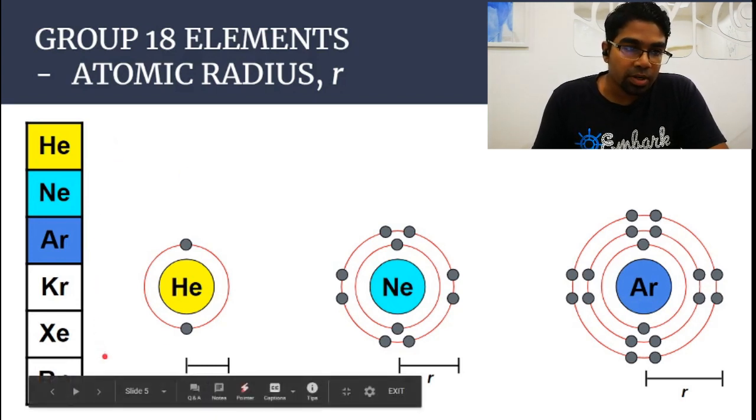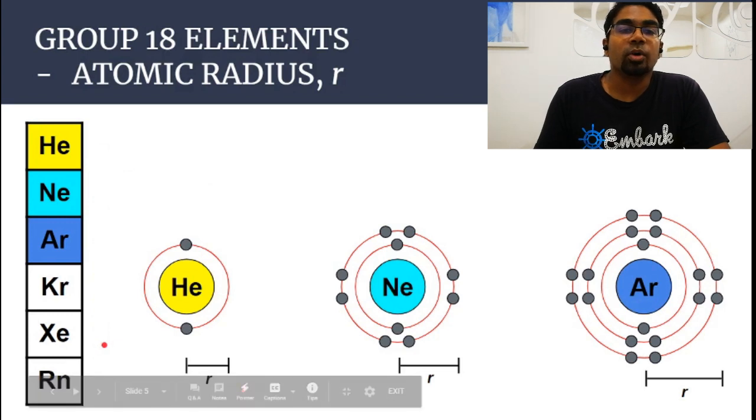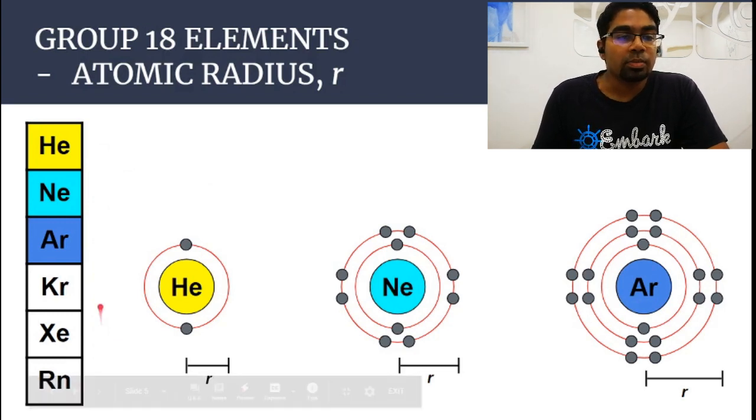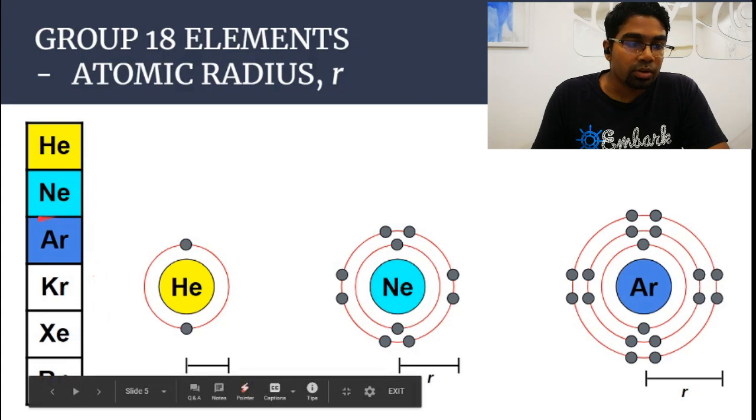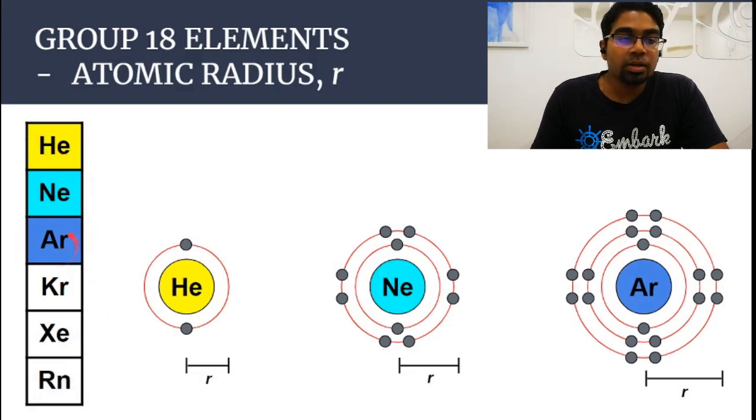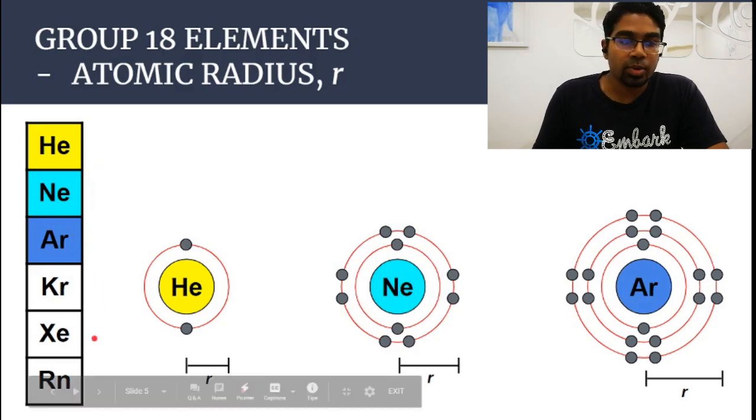This means that as we go down from helium all the way until radon, the melting point and boiling point increases. Let's say I were to compare the melting point of argon and helium. Argon will have a higher melting point since it is lower down the group. That is the trend.